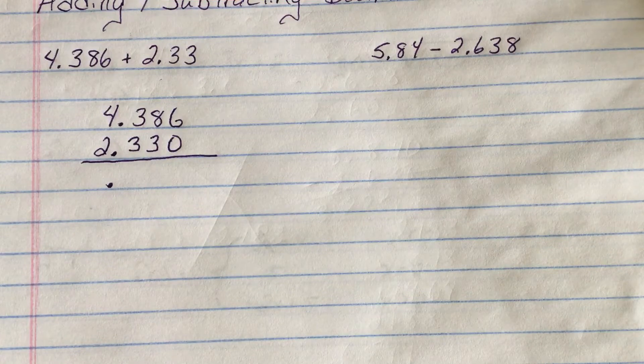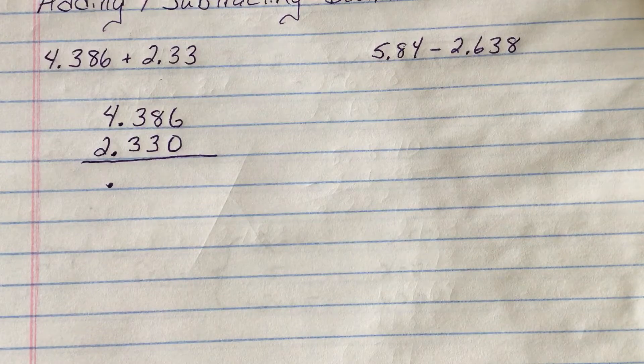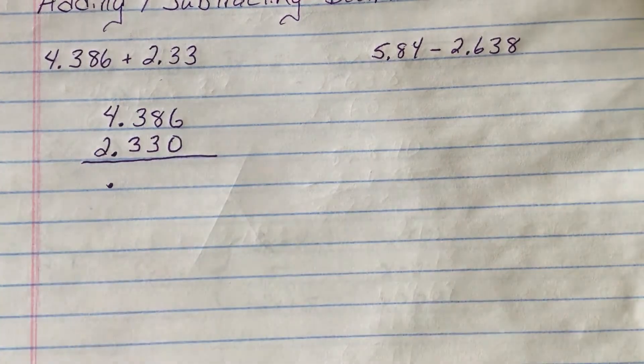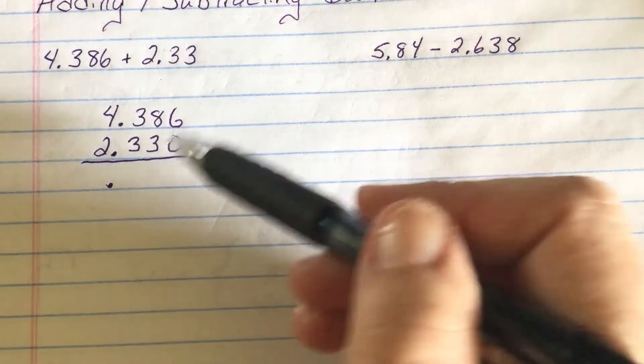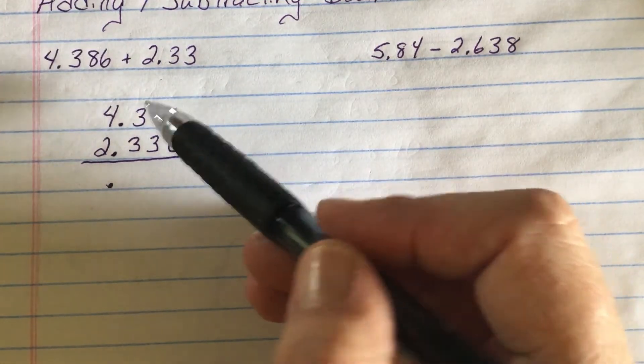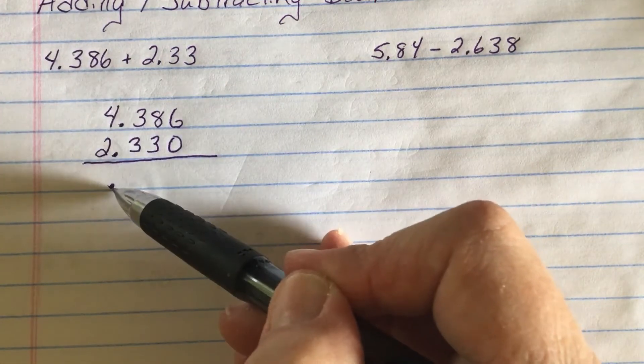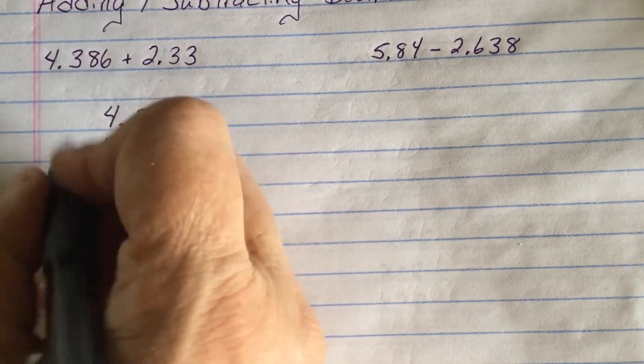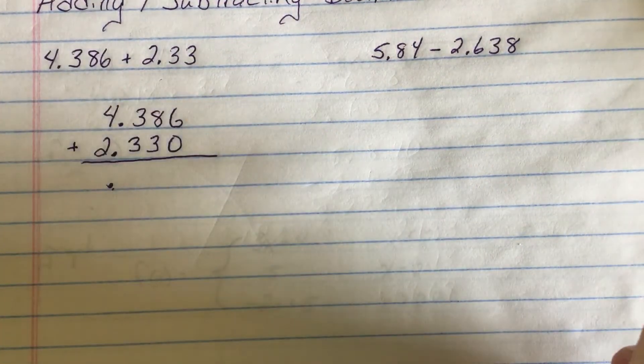But when we want to line things up, sometimes we'll add it in. I add it in just so that you can see that, yeah, it is if I want to add it, don't need to. It's lined up off of the decimal. This is our addition problem. So now we add.